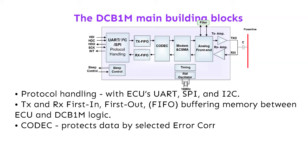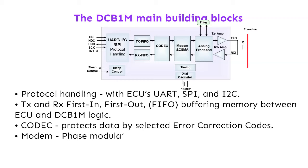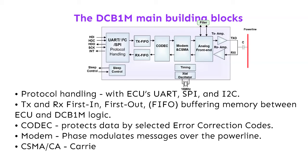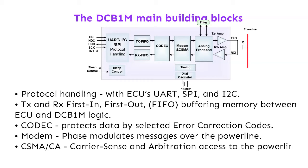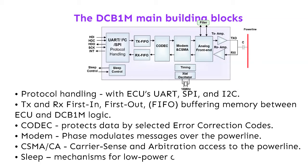Codec: protects data by selected error correction codes. Modem: phase modulates messages over the powerline. CSMA/CA: carrier sense and arbitration access to the powerline. Sleep: mechanisms for low power consumption in sleep mode.